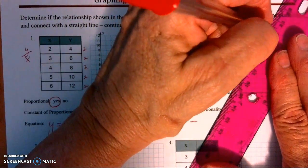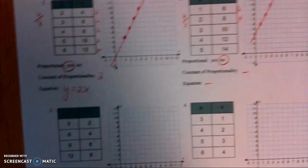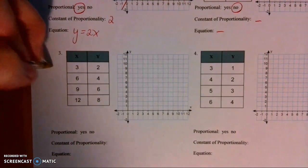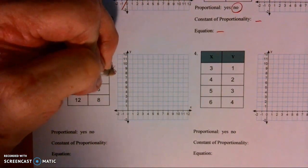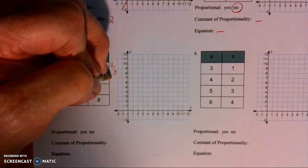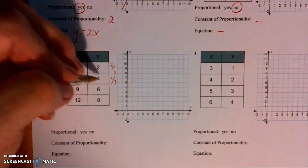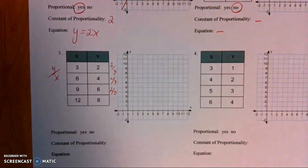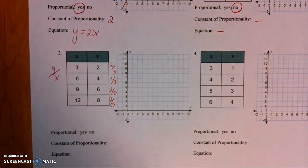Let's look at number 3. Be careful with number 3 because remember it's y over x. This is going to be 2 over 3 — that's perfectly fine. Then 4 over 6 simplifies to 2 over 3, 6 over 9 simplifies to 2 over 3, and 8 over 12 simplifies to 2 over 3.